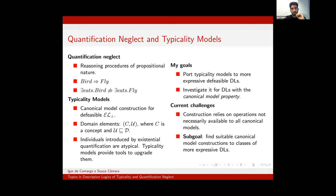Typicality models are a semantic framework proposed recently by Peñaloza and Turhan that address this problem. They are based on canonical model construction for the description logic EL-bottom. Their domain elements are of the form CU, where C denotes a concept and U the feasible information associated to this concept. In materialization-based reasoning, individuals introduced by existentials are non-typical, and typicality models provide a tool for upgrading them.